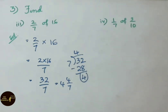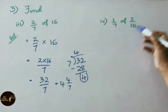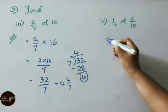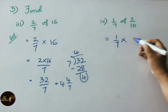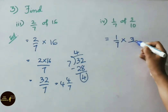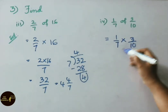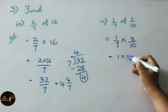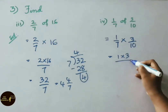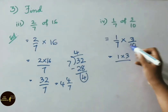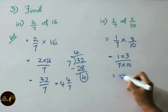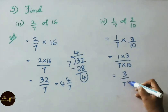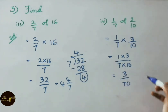The fourth sum: 1 by 7 of 3 by 10 equals 1 by 7 into 3 by 10. Multiply the numerators: 1 into 3, and multiply the denominators: 7 into 10. That gives 3 by 70. So the answer is 3 by 70.